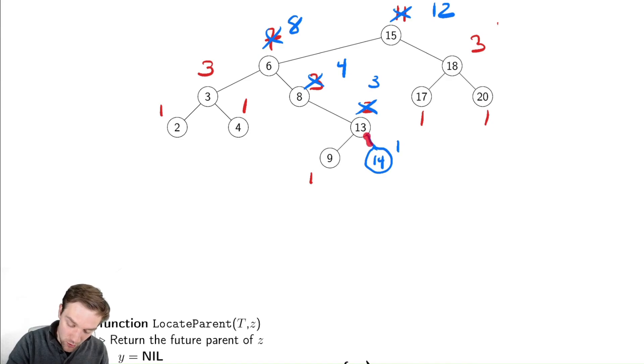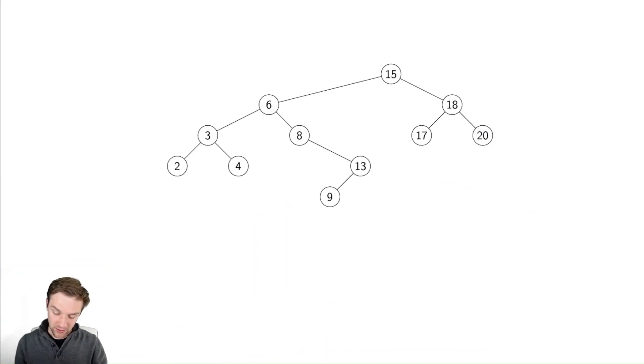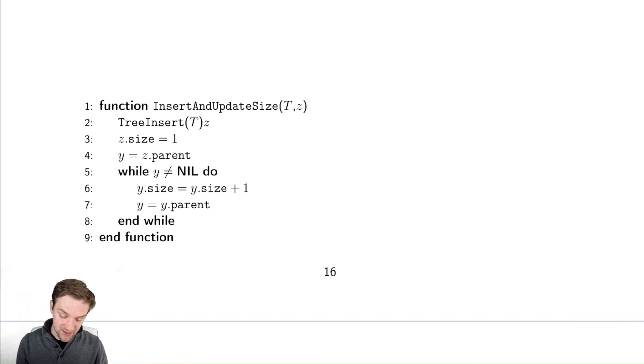Notice I only had to go up and never had to go down and therefore this algorithm should be relatively efficient for updating the size. So let's see how that works. If we scroll down we have insert and update size. How does this work? We perform an insertion and then we are going to update the size of z's parent until we get to the root. Exactly like we did and we're only ever adding one because we inserted exactly one node.